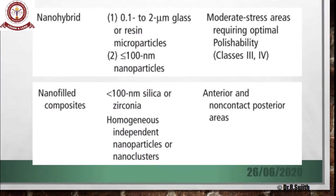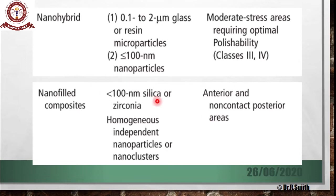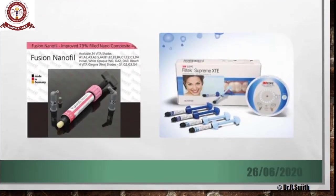Regarding nanohybrid versus nanofill, which is better mechanically? Nanohybrid is the best — research has shown that nanohybrid has higher strength compared to nanofill alone. Nanohybrid consists of both microparticles and nanoparticles and can be used in moderate stress-bearing areas. Nanofill particles are used only in anterior and non-contact posterior areas such as Class I cavities, and contain only nanometer-sized filler particles — either silica or zirconia. These are examples of nanocomposites — nanofill as well as nanohybrid — available in the market.